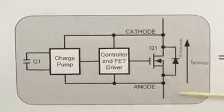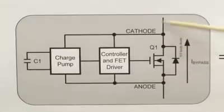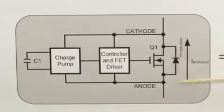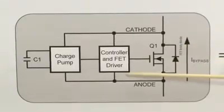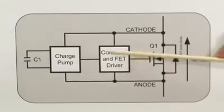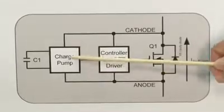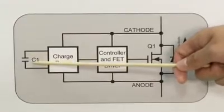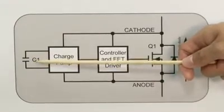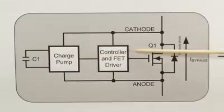When the panels are shaded, at first the current will flow through the body diode of the MOSFET. The voltage drop across the body diode will create energy to power up our controller and initiate the charge pump. The charge pump will then charge the energy into this capacitor. And once the capacitor energy level has been reached, the controller will turn on the MOSFET.